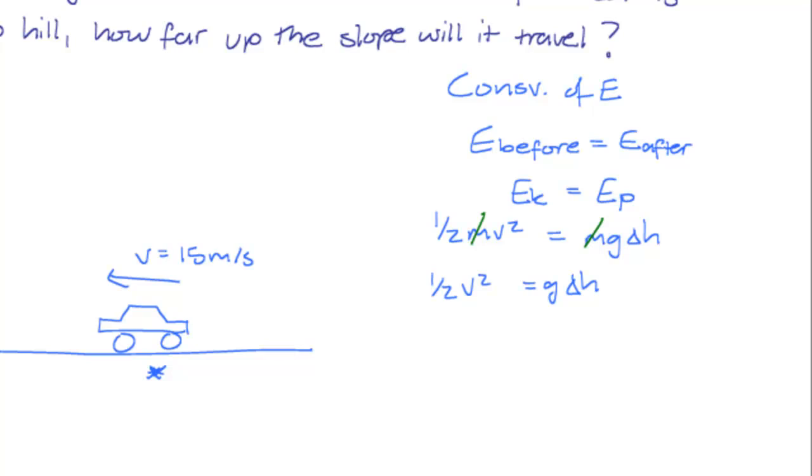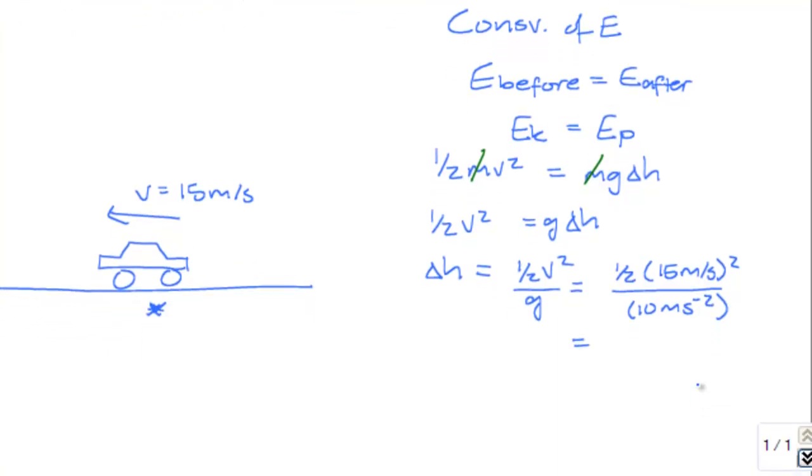We're solving for delta H, the height that the car will be able to travel uphill, and so we see that delta H is equal to half v squared divided by g, which in this case is half 15 meters per second squared divided by g, which we usually use as 10 meters per second squared. It works out to 112.5 meters squared per second squared, and we're dividing this by 10 meters per second squared.